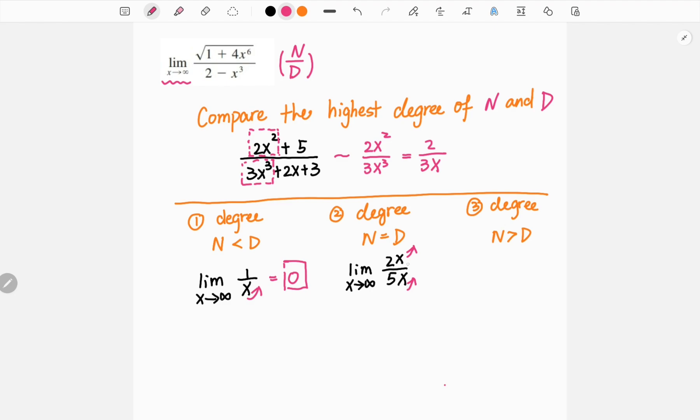We only have left the coefficient here, so our limit is the same as the coefficient, which is 2 over 5.